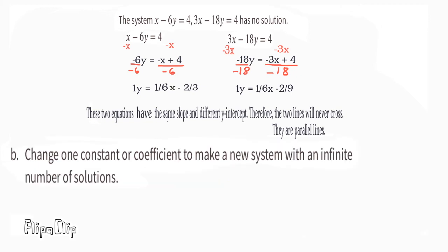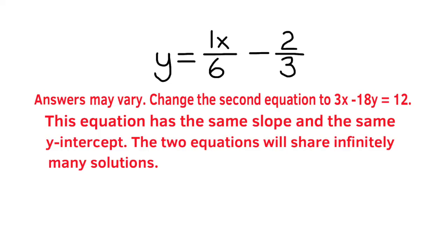Part B: change one constant or coefficient to make a new system with an infinite number of solutions. Change the second equation to 3x minus 18y equals 12. This equation has the same slope and the same y-intercept, so the two equations will share infinitely many solutions.